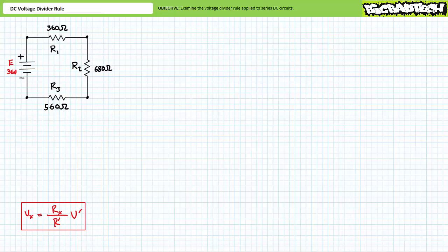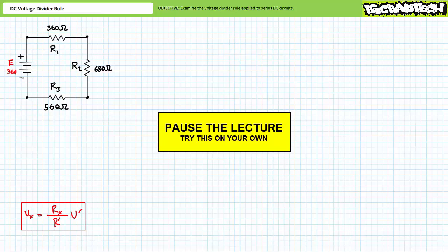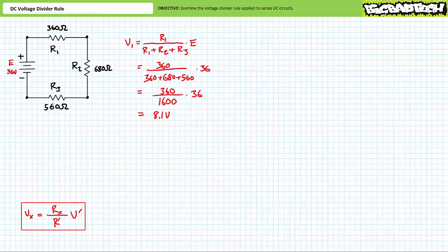Let's try another illustrated example of the voltage divider rule, this time featuring a series combination of three elements — solve for the voltage drop across each element. The general-use voltage divider rule formula does not change with more elements in series: Vx equals Rx divided by R′ times V′. The voltage divider rule solving for V1 suggests V1 equals R1 divided by (R1 plus R2 plus R3) times source voltage E. Substituting in our given values yields V1 to be 8.1 volts.